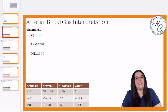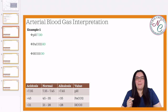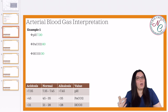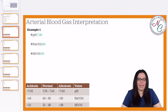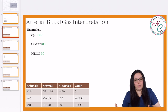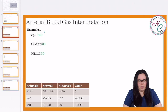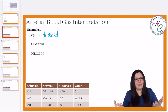Let's begin with example number one. We have a pH of 7.3, a PaCO2 of 60, and a bicarb HCO3 of 30. As always, we begin with our pH. Our pH is 7.3. Normal is between 7.35 to 7.45. We know that this value is low, so we're in more of an acidic state.